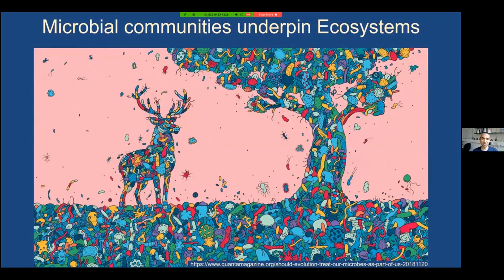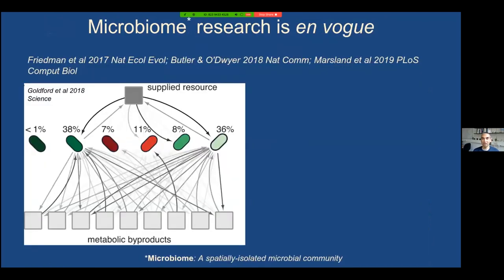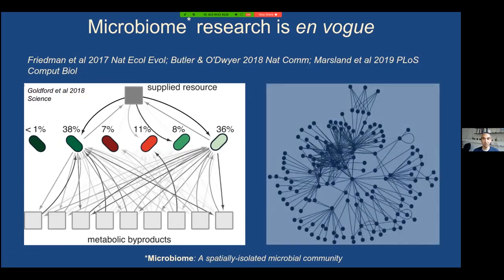Microbiomes and microbial communities are in everybody's thinking these days. This figure from Quanta Magazine makes the point that they are everywhere and potentially affect everything, from how organisms function to how ecosystems function. Microbiome research is in vogue — there's a lot of work on how isolated microbial communities assemble and recycle carbon; a good example is leaf litter decomposition, where fungi and bacteria break a single leaf down to carbon dioxide over time through complex interactions.